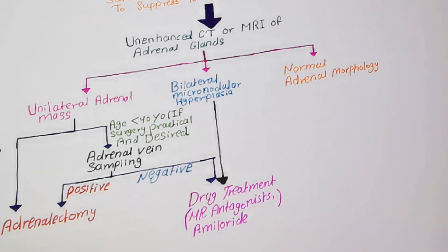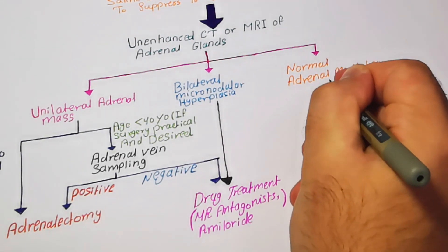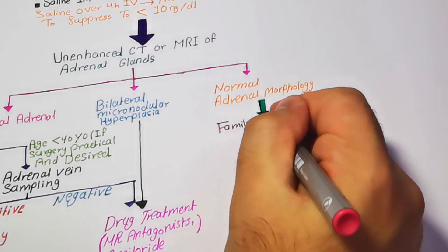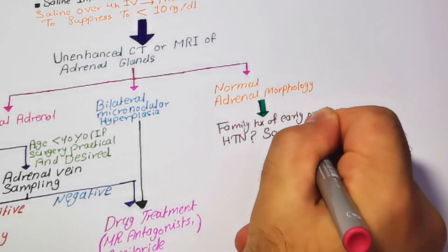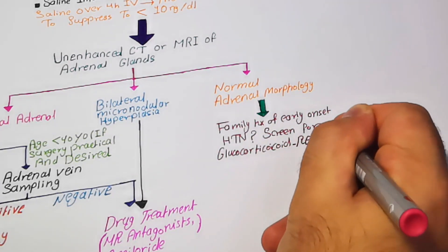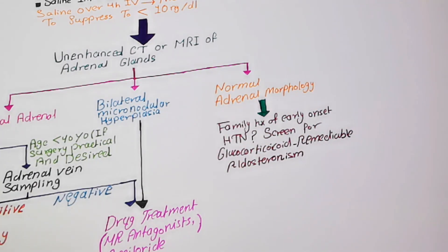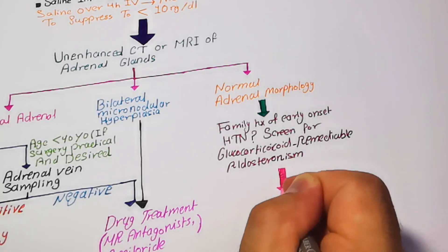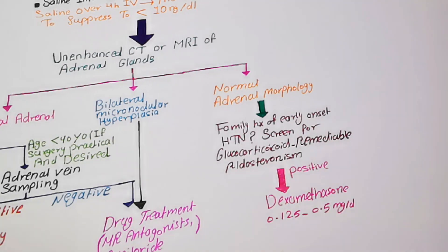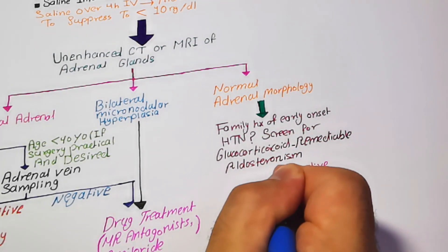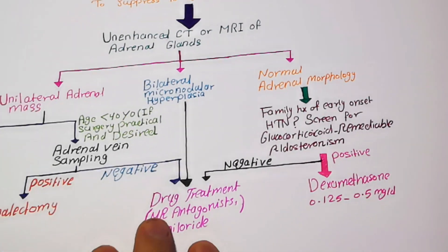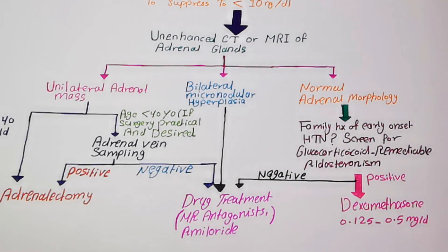The third case is when the patient has normal adrenal morphology but has a family history of early-onset hypertension. In this case, you must screen for glucocorticoid-remediable aldosteronism, which is a rare genetic disorder in which aldosterone secretion is solely under the control of ACTH. If the patient is positive for this condition, treatment will be with dexamethasone. If the patient is negative, we proceed with drug treatment including mineralocorticoid antagonists or amiloride.